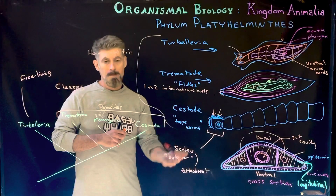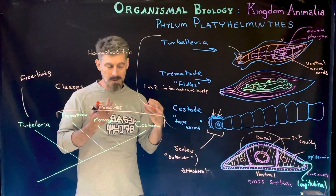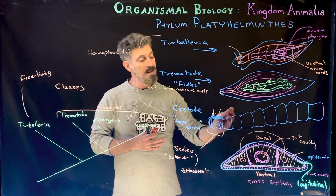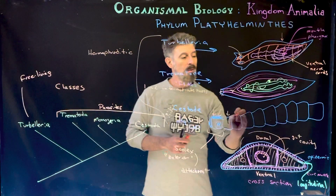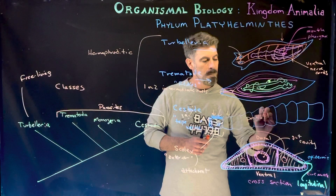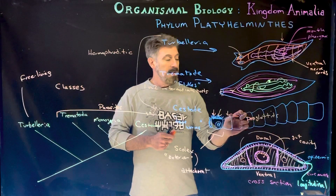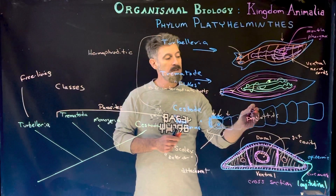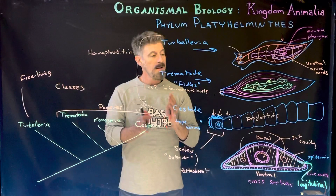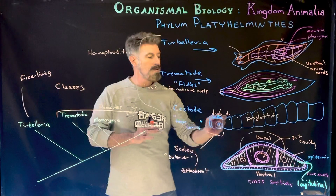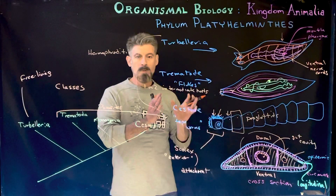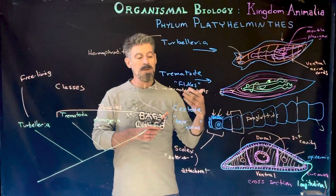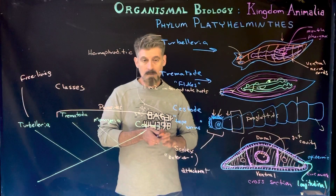The cestode then produces repeating structures called proglotids. Each proglotid is asexually produced — sort of a replicate of the next one. This is not a segmented worm, even though it looks like it. Each proglotid is its own individual unit, and proglotids will get broken off over time. Inside each proglotid are both male and female reproductive organs, as all these groups are hermaphroditic.